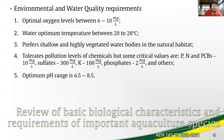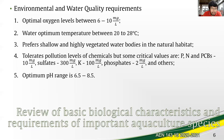For the environmental and water quality requirements, optimal oxygen levels are between 6 to 10 milligrams per liter. Optimum temperature is between 20 to 28 degrees. The common carp is a bottom dweller and feeder and thus prefers shallow and highly vegetated water bodies in its natural habitat. In tanks, they are also found at the bottom.